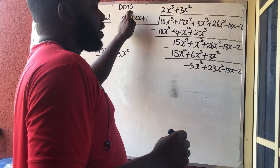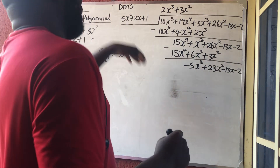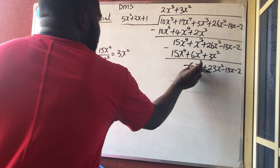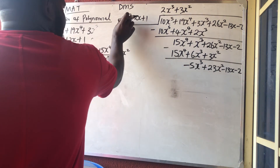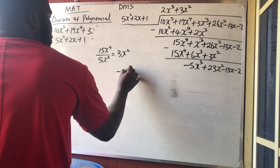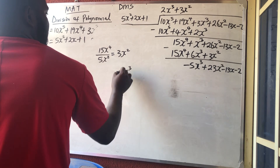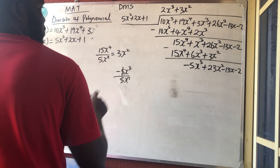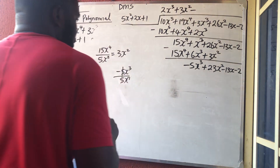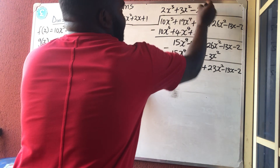The highest power in the current remainder is x³ and the divisor's highest power is x², so we still continue DMS. Division: −5x³ divided by 5x² — the 5s cancel, leaving −1, and removing x² from x³ leaves x. So −x is added to the quotient.